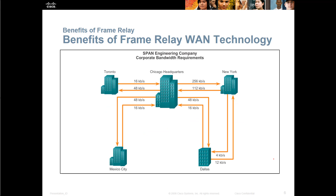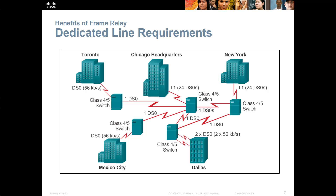The interesting thing with frame relay is it can be asymmetrical, meaning the speeds can be different based on whatever your requirements are and what you want to pay. You can do a dedicated line if you choose, but if you want to connect from Toronto to Mexico City, you may have to connect to HQ first, then to Mexico City. So there are some issues with dedicated line requirements, because if you want to connect between locations, you may have to go through a centralized node first.